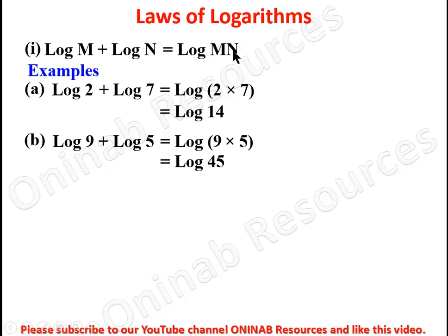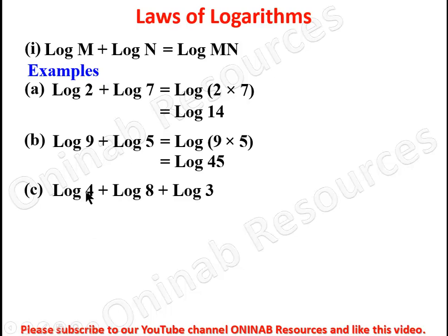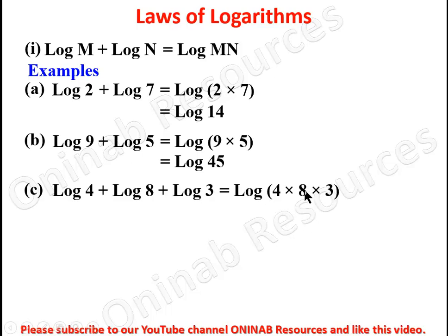This law can also be reversed: log mn equals log m plus log n. For example, log 4 plus log 8 plus log 3 — all of the same base, adding them — gives log 4 times 8 times 3. Four times 8 is 32, times 3 gives 96, so we have log 96.